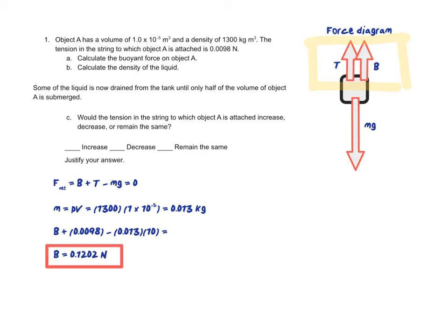Alright, next part B asks us to calculate the density of the liquid. And the density of the liquid, I can use the buoyant force equation that we came up with in the last video part 4. And so I know that that equation is B is equal to rho times V times G. And if I plug the values in now that I have for that, I can solve for rho.